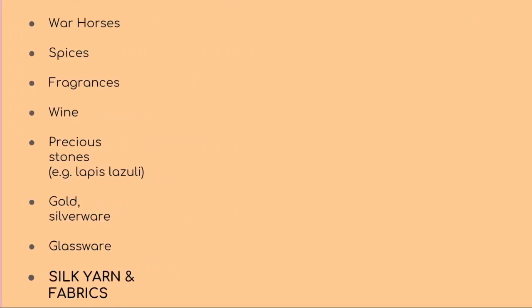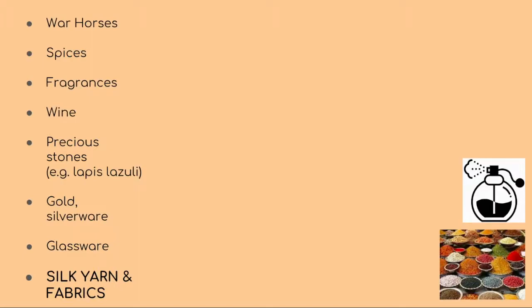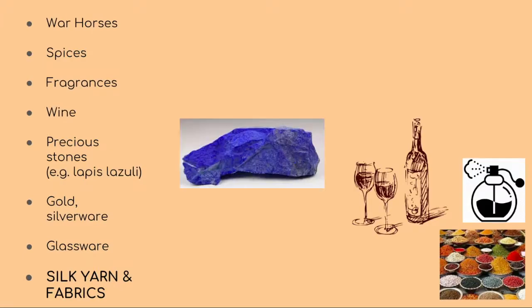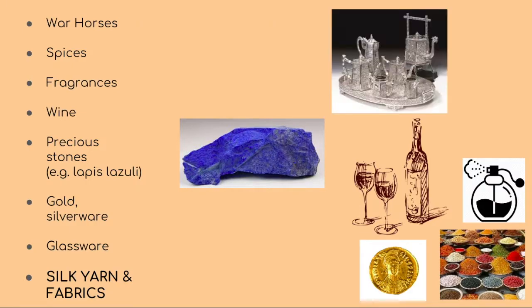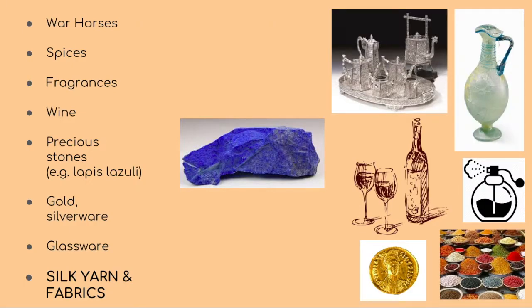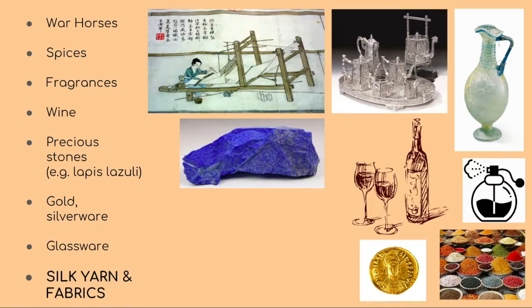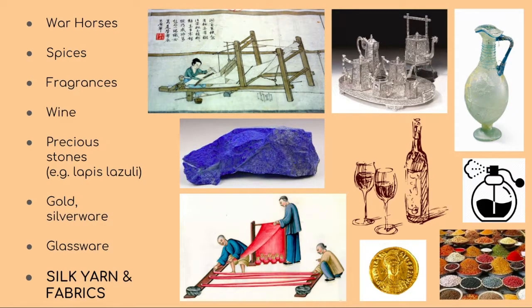Some of the examples of highly relevant products on the Silk Road were war horses, spices, fragrances, wine, precious stones like lapis lazuli, gold, silverware, and glassware, and of course, silk yarn and fabrics.